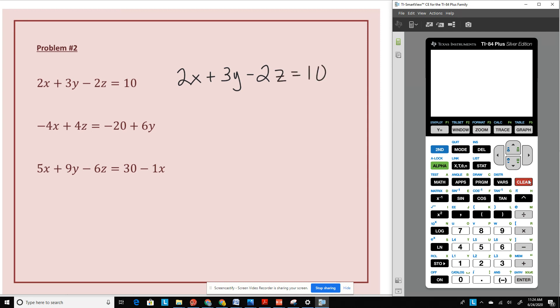The second equation, I have to move that 6y. I have to get rid of it here. And I have to make sure it's in order. So I'm going to put it in between the negative 4x and the 4z. My third equation, I'm going to move the 1x. I have 6x plus 9y minus 6z equals 30.